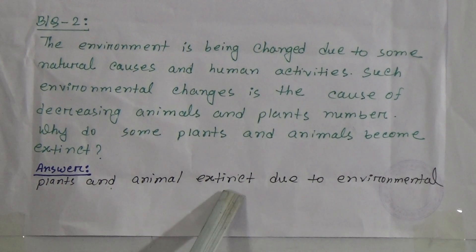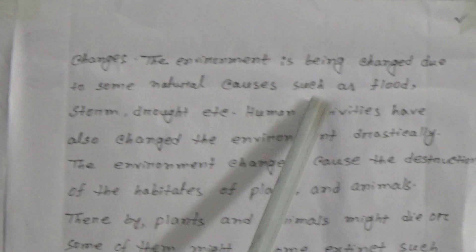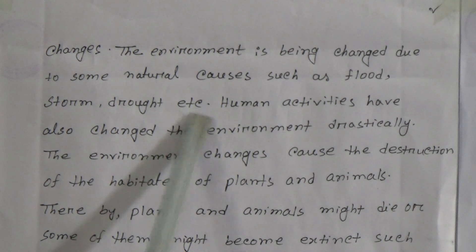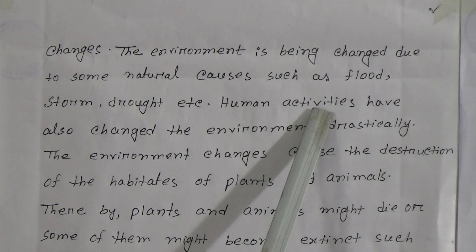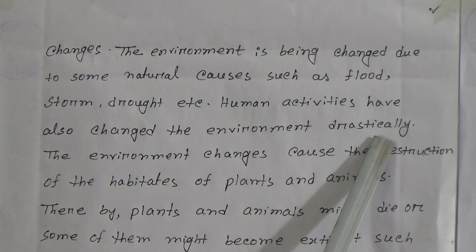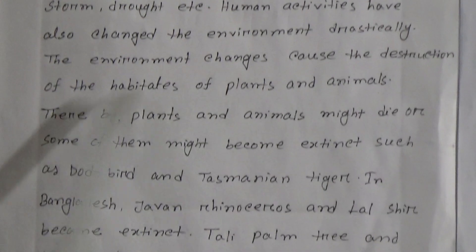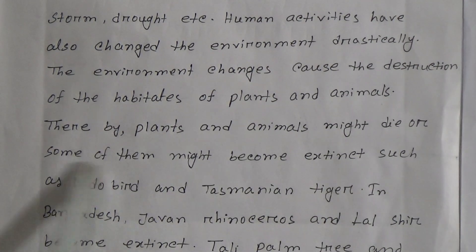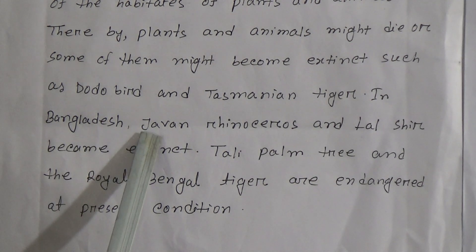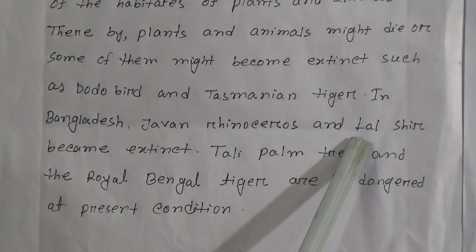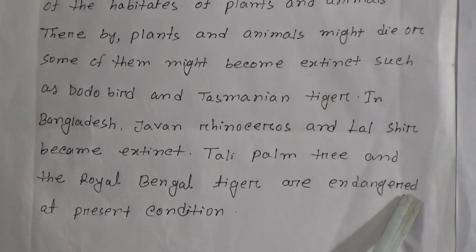Answer: Plants and animals become extinct due to environmental changes. The environment is being changed due to natural causes such as flood, storm, drought, etc. Human activities have also changed the environment drastically. These environmental changes cause the destruction of habitats of plants and animals, and thereby plants and animals might die or become extinct — such as the dodo bird and Tasmanian tiger. In Bangladesh, the Javan rhinoceros and lalshar have become extinct. The tali palm tree and the Royal Bengal tiger are endangered at present.